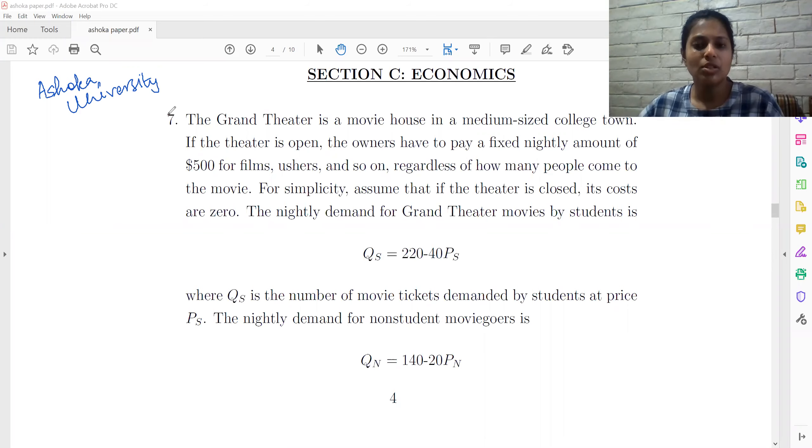This is a question on monopoly and price discrimination. So the marginal cost is zero and the fixed cost is $500 if films are shown or the theatre is operating, and it is zero if the theatre is not operating. So marginal cost is basically zero.